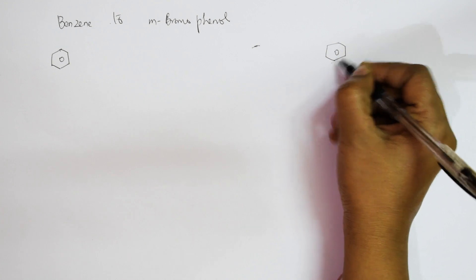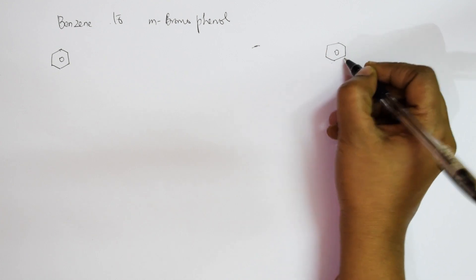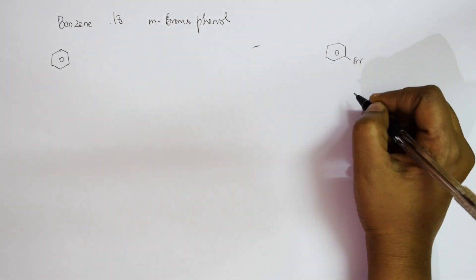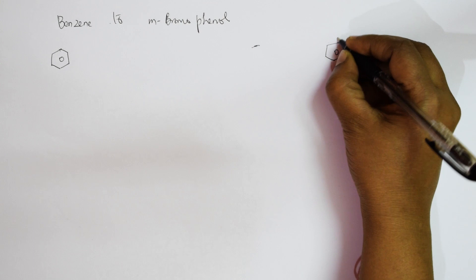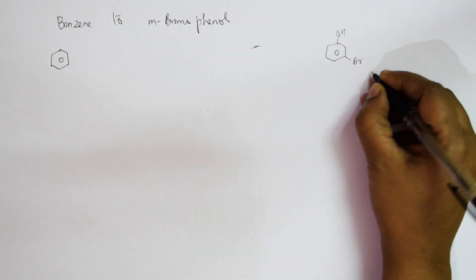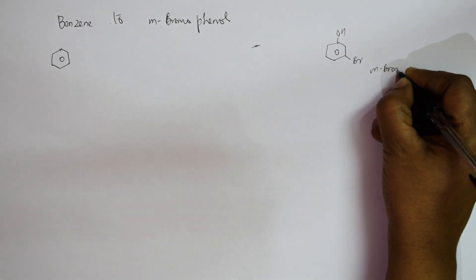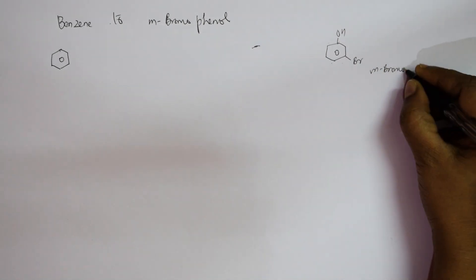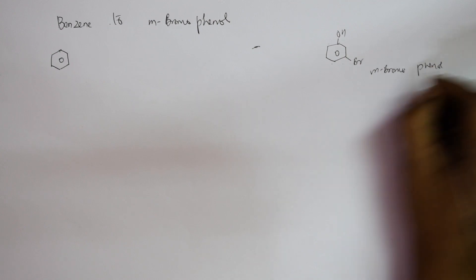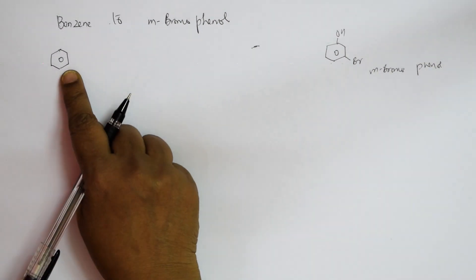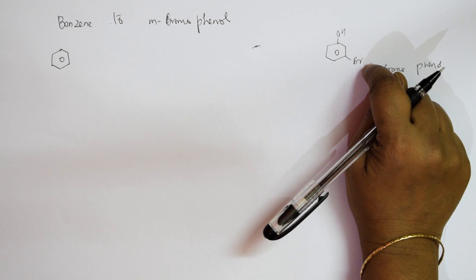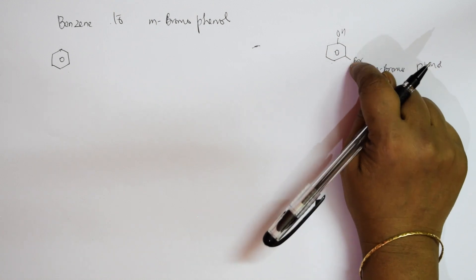This is ortho, this is meta — so at the meta position we have Br, and it is a normal phenol. The name is meta-bromophenol. In this compound we have benzene, an OH group, and a Br group — we need to introduce both these groups.